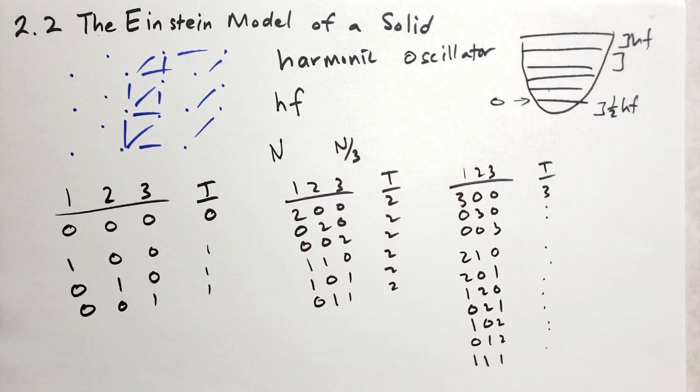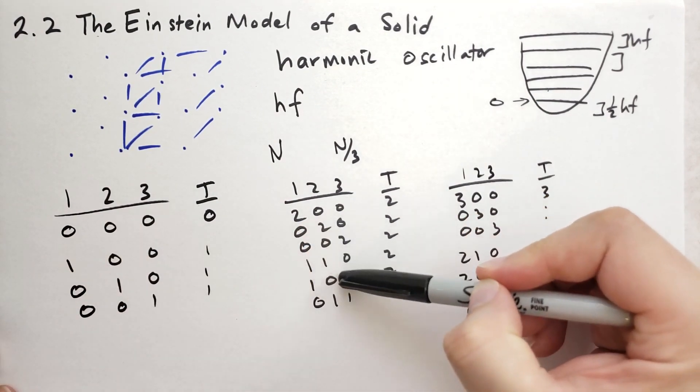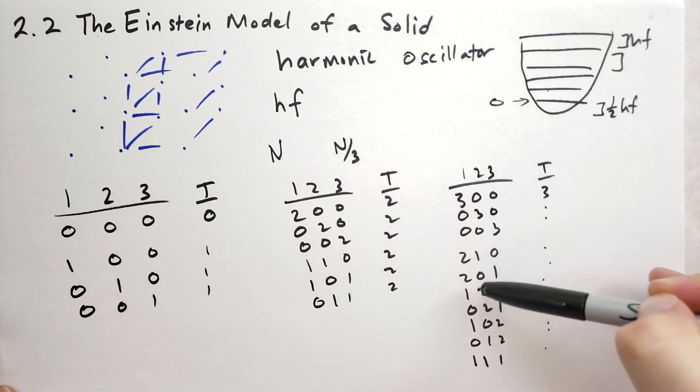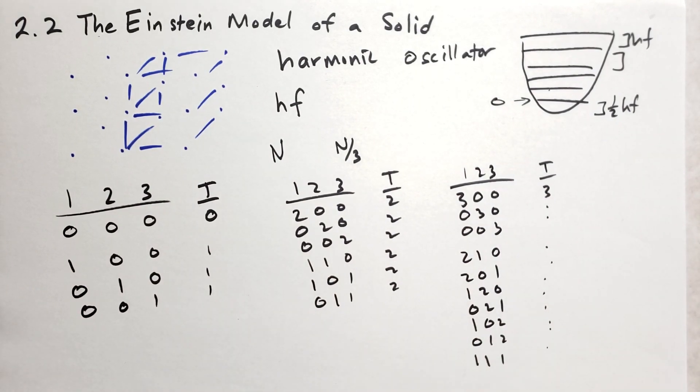That's the different ways that we can allocate energy with a single molecule oscillating in three possible directions. So we can count the microstates. There's one, two, three, four, five, six, seven, eight, nine, 10, 11, 12, 13, 14, 15, 16, 17, 18, 19, 20 different ways to arrange energy such that the total energy is equal to or less than three.